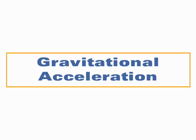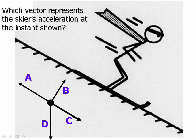Let's talk about gravitational acceleration. Suppose a skier is skiing down a slope and that she's speeding up as she goes. Which of these four vectors, A, B, C or D, best represents the direction of the skier's acceleration at the instant shown?